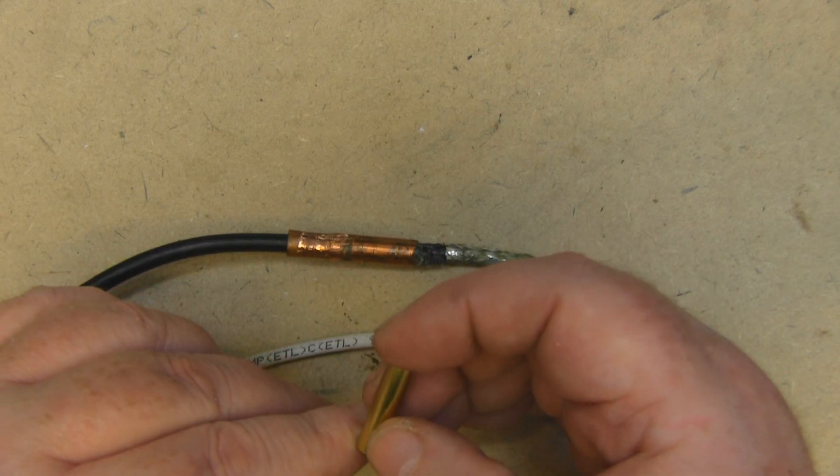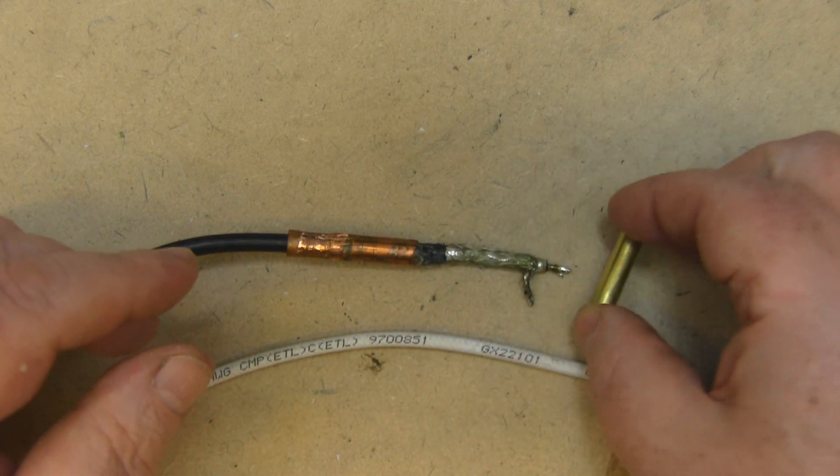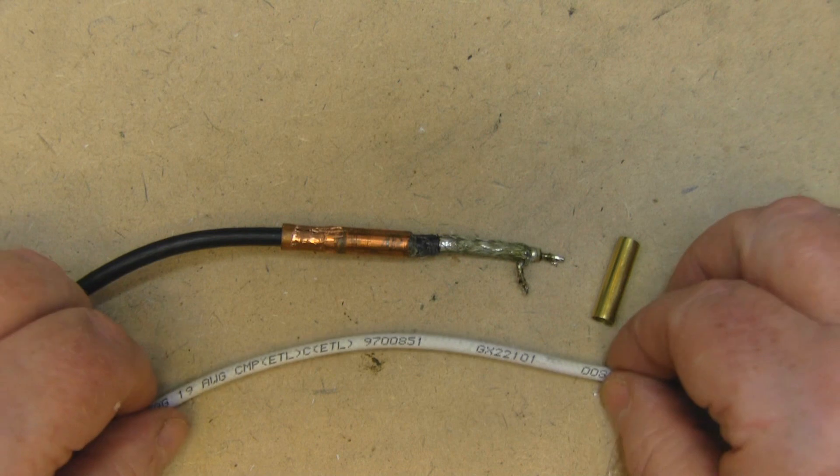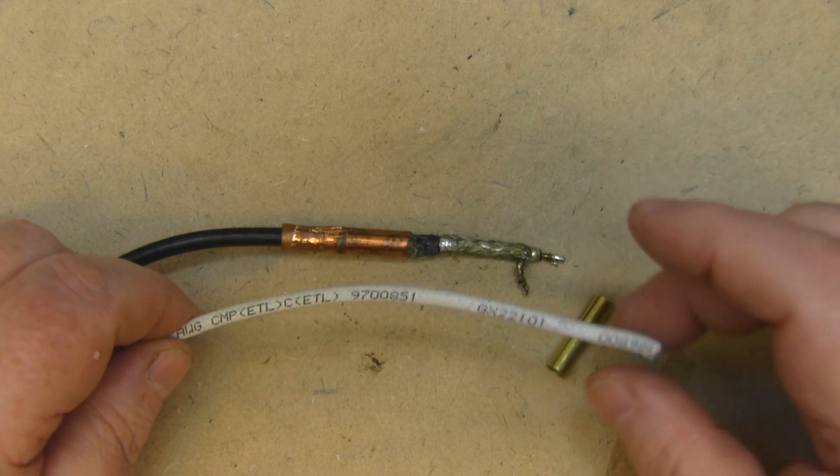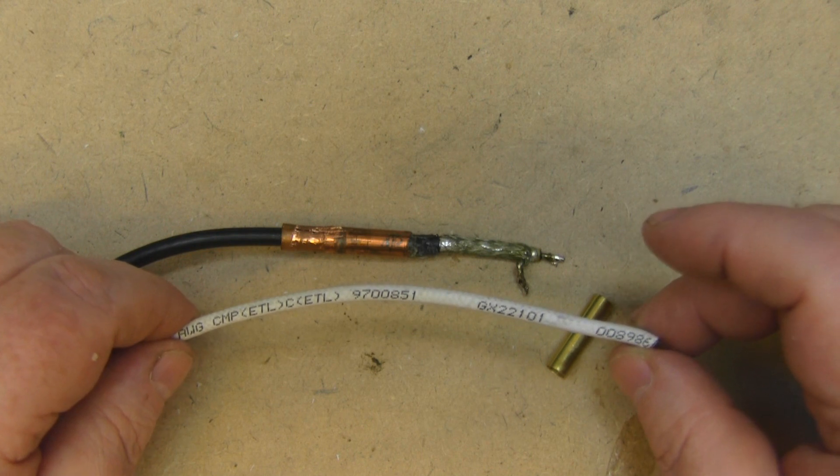So what I'm going to have to do now is prepare the end of this coax so we can solder on the balun and also attach it to the Yagi.